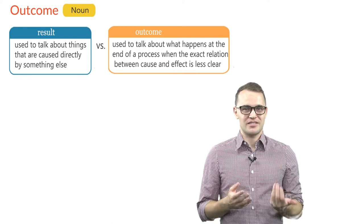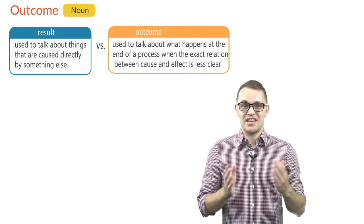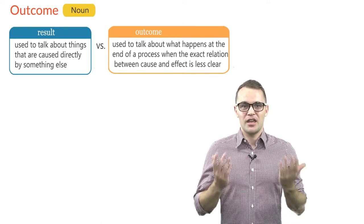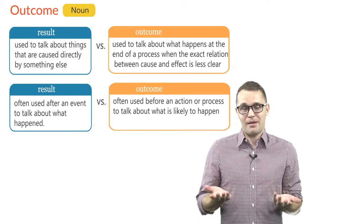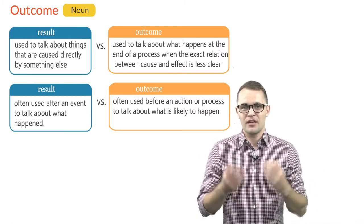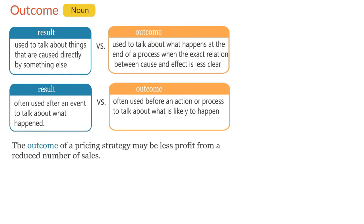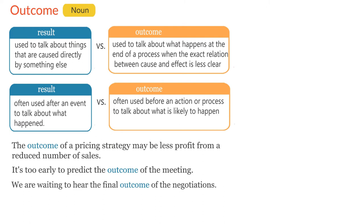The last word we are looking at today is outcome. People often confuse outcome and result. Result is often used to talk about things that are caused directly by something else. Outcome is more often used to talk about what happens at the end of a process, when the exact relation between cause and effect is less clear. In addition, result is often used after an event to talk about what happened, while outcome is often used before an action or process to talk about what is likely to happen. For example: the outcome of a pricing strategy may be less profit from a reduced number of sales. It's too early to predict the outcome of the meeting. We are waiting to hear the final outcome of the negotiations. I know that my students worked hard, so I expect a good outcome.